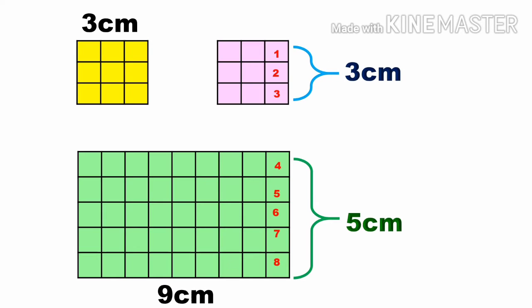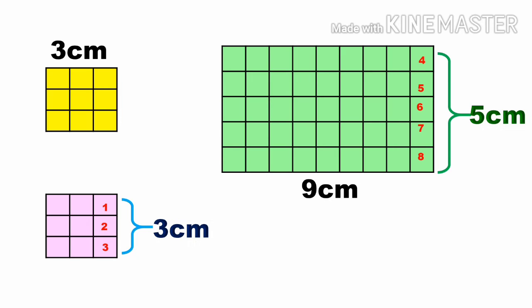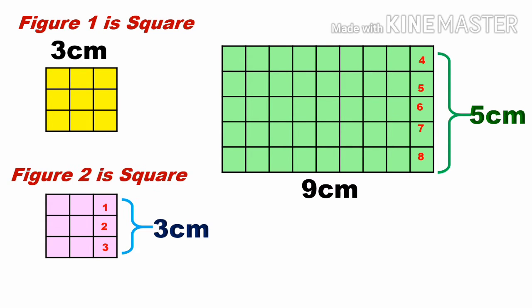We can identify three shapes within the irregular figure: the yellow shape is figure one, which is a square; the pink shape is figure two, which is also a square; and figure three is a rectangle.